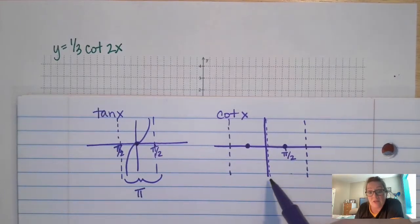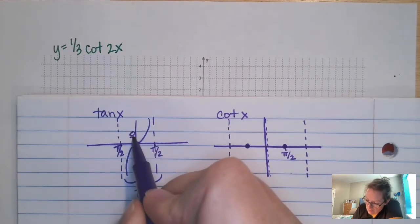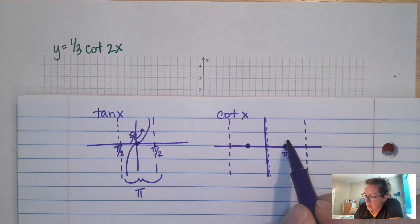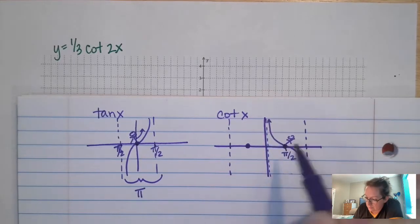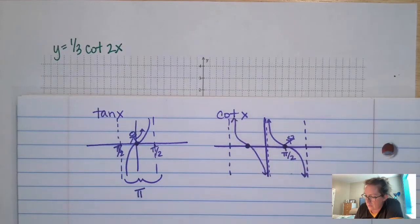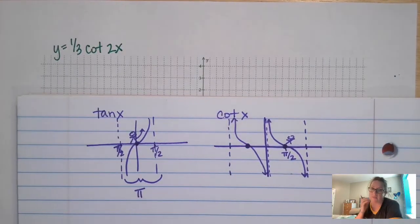And then we said it's shifted, or flipped. So if you think about, here you are on this tangent function, and you're going up, right? Here you are on this cotangent function, you're not going up, you're going down. So it's a negative, and it's shifted.